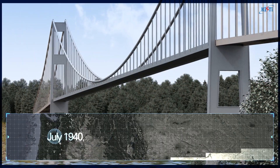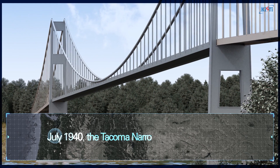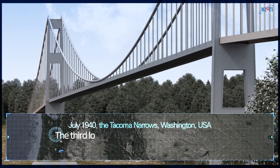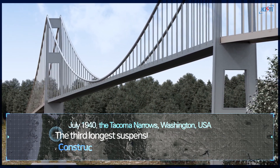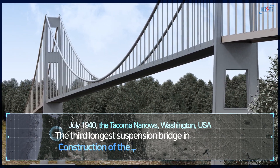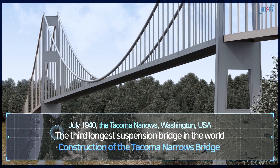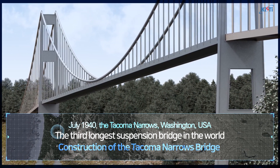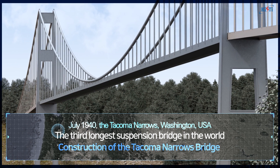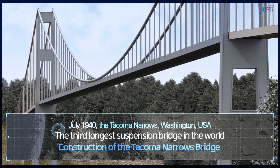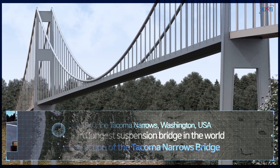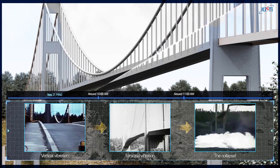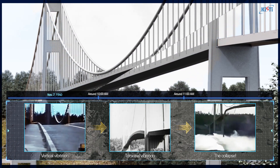In July of 1940, the Tacoma Narrows Bridge — the world's third longest suspension bridge at the time — was built spanning the Tacoma Narrows in the U.S. state of Washington. And on November 7, 1940, the Tacoma Narrows Bridge, once called the most beautiful bridge in the world, helplessly collapsed just four months after opening to traffic.